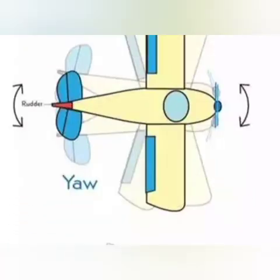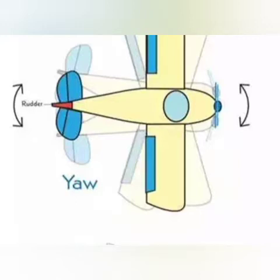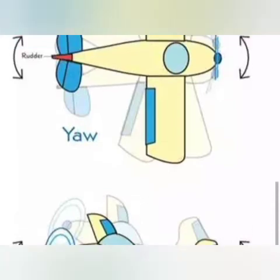This is Yaw. Yawing is done by the rudder section in the tail of the aircraft. The tail section contains the vertical stabilizer and horizontal stabilizer. In the vertical stabilizer, the rudder section is available. Moving the rudder left and right creates left yaw and right yaw, as shown in the diagram.